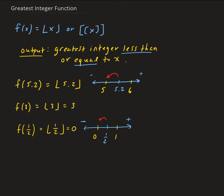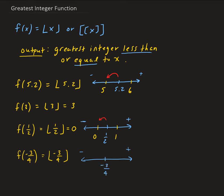Let's look at some negative values. Say we have f of negative three-fourths. On the number line, negative three-fourths sits between negative 1 on the left and 0 on the right. The greatest integer less than or equal to x is going to be negative 1. It always gives you the integer to the left, unless the input is an integer.